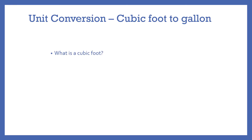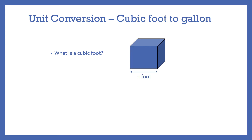So what exactly is a cubic foot? A cubic foot is a unit of volume that is occupied by the same space as a cube with the dimensions of 1 foot by 1 foot by 1 foot — so 1 foot on all sides.